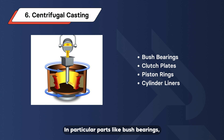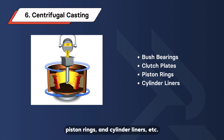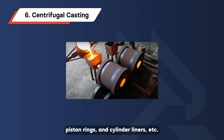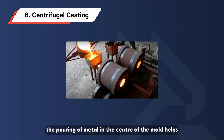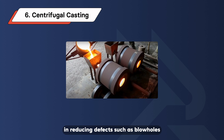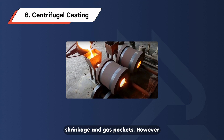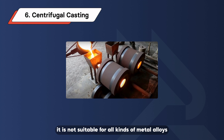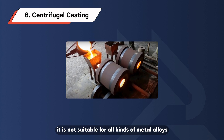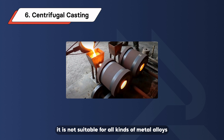In particular, parts like bush bearings, clutch plates, piston rings, and cylinder liners are produced. Also, the pouring of metal in the center of the mold helps in reducing defects such as blowholes, shrinkage, and gas pockets. However, it is not suitable for all kinds of metal alloys.